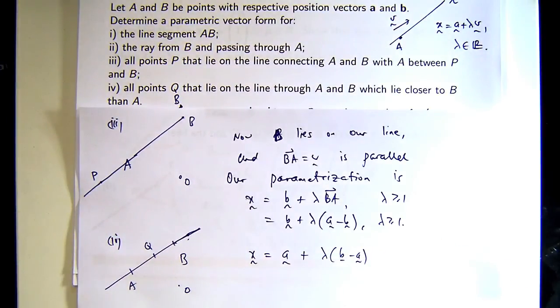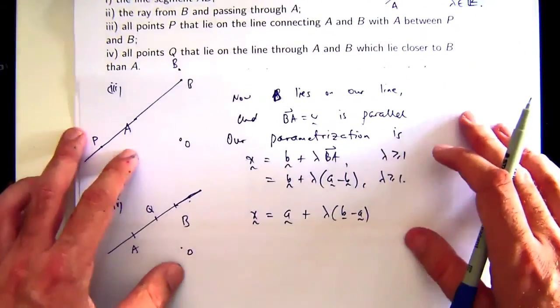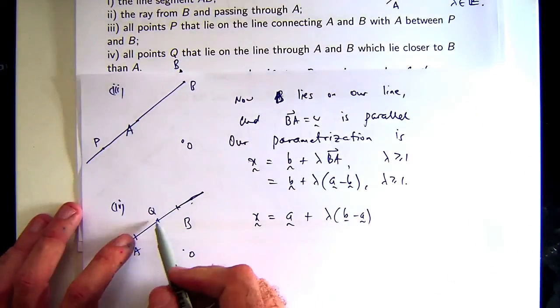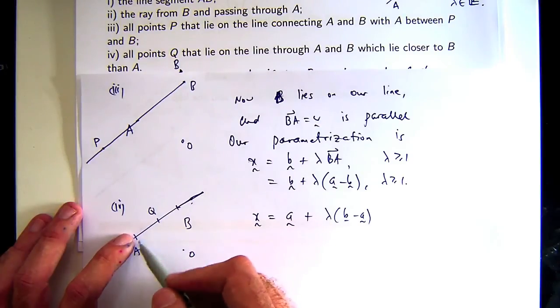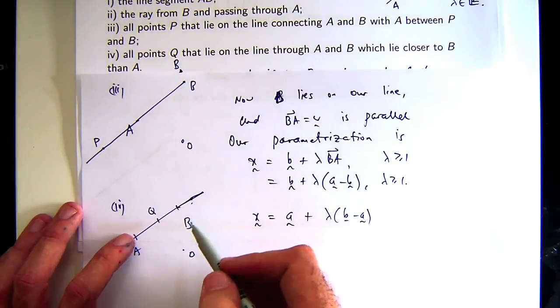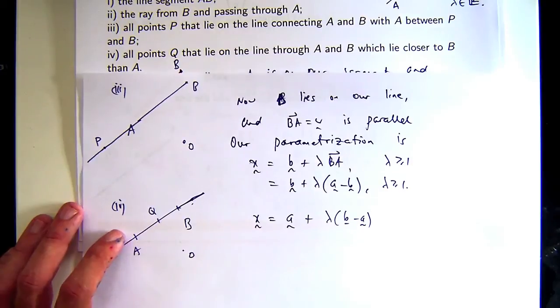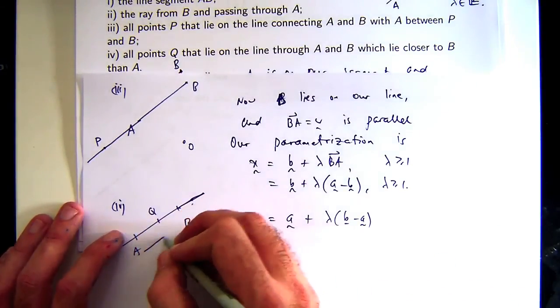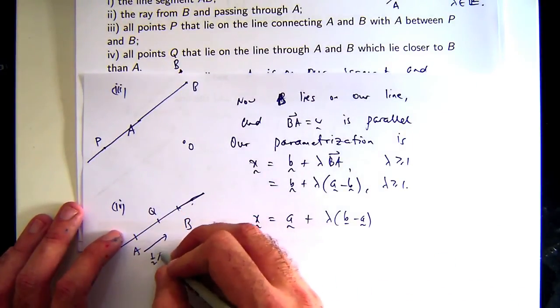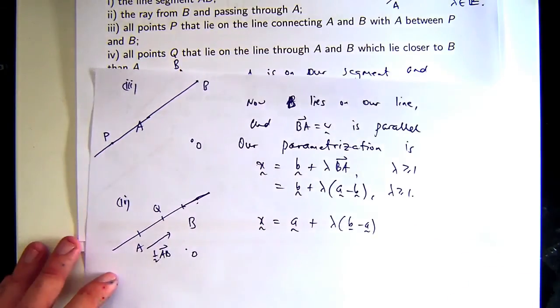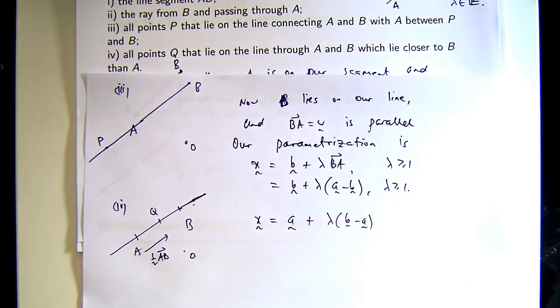So we don't want this. We want something like that. So the vector from here to here is like a half AB. So we kind of want to start lambda at a half.